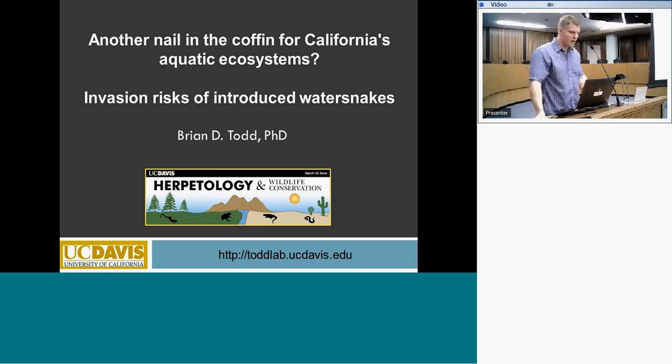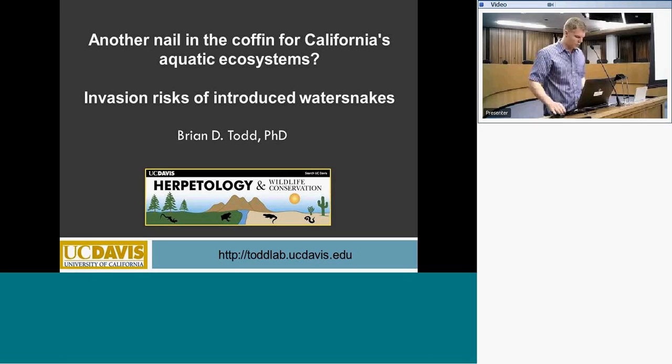We're going to turn to what I consider another nail in the coffin for California's aquatic ecosystems. This issue isn't really just about aquatic snakes and non-native snakes produced in California, but more about their potential impact and the opportunity for us to do something about it before they become more widely established and contribute yet more to the declines we've seen with our native freshwater amphibians and inland fishes.